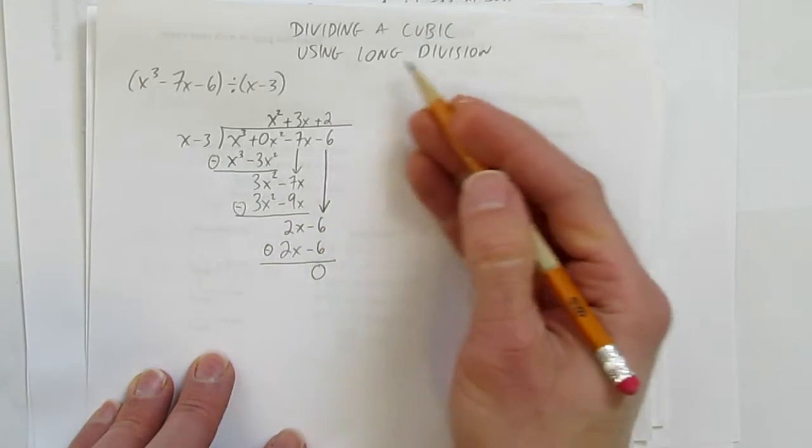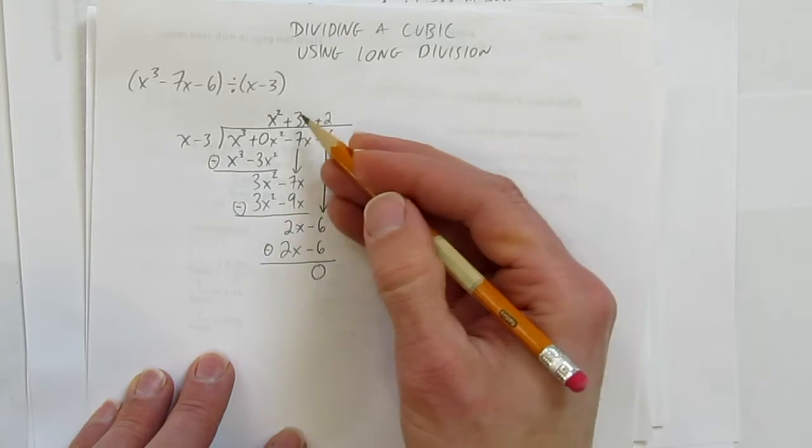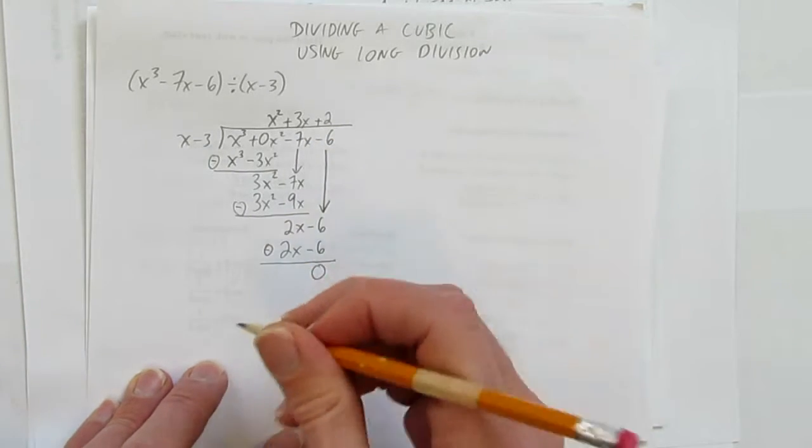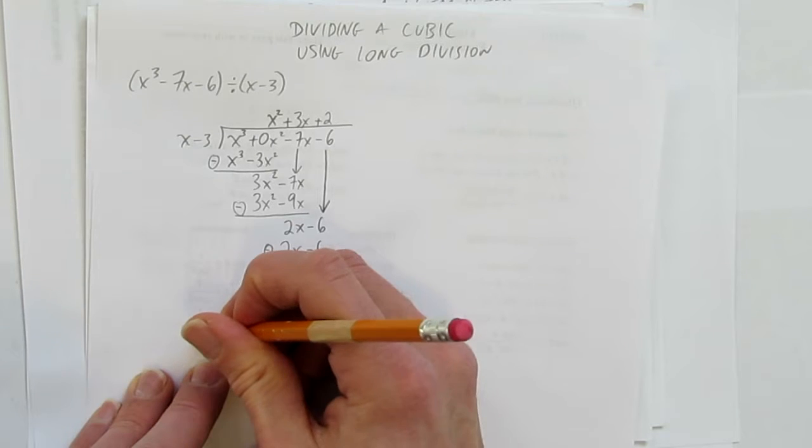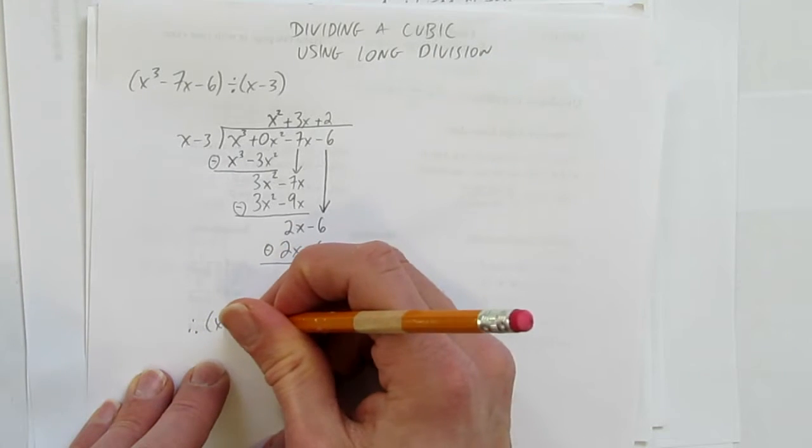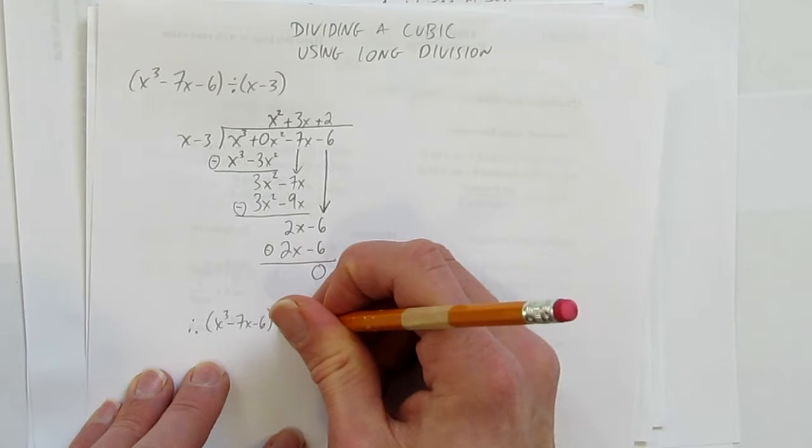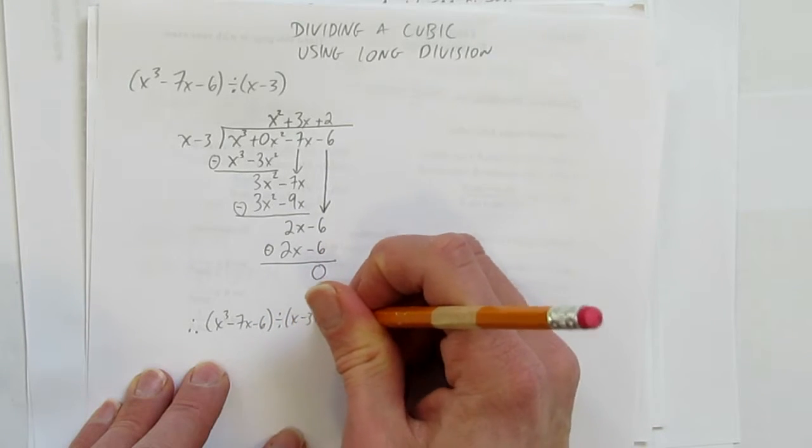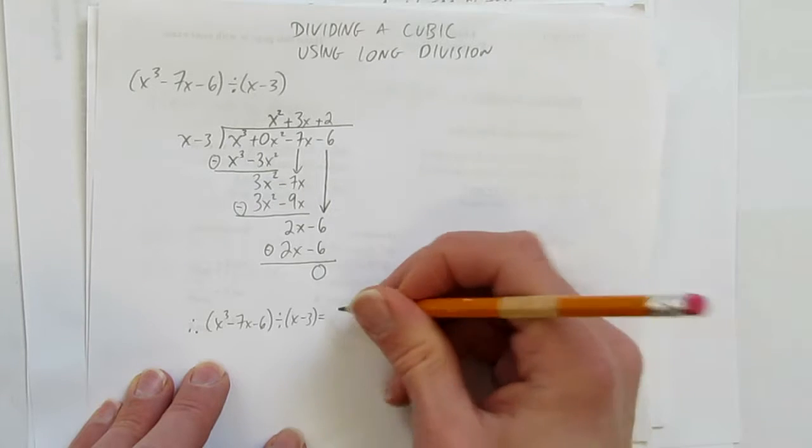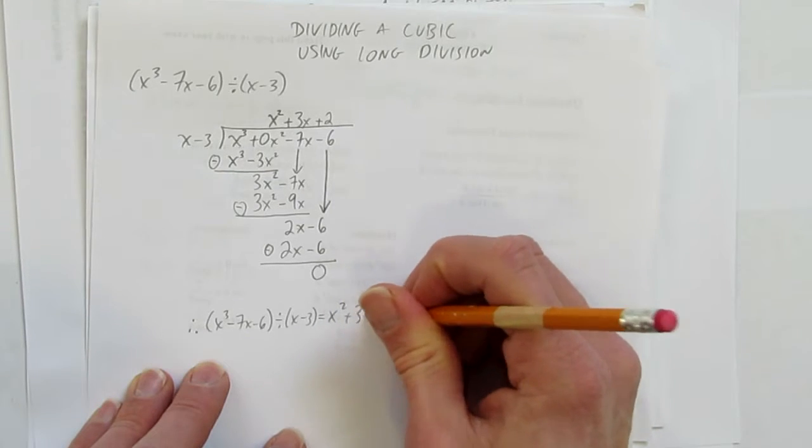We've done it. We've divided a cubic by long division. Here's our answer. Therefore, (x³ - 7x - 6) divided by (x - 3) equals x² + 3x + 2.